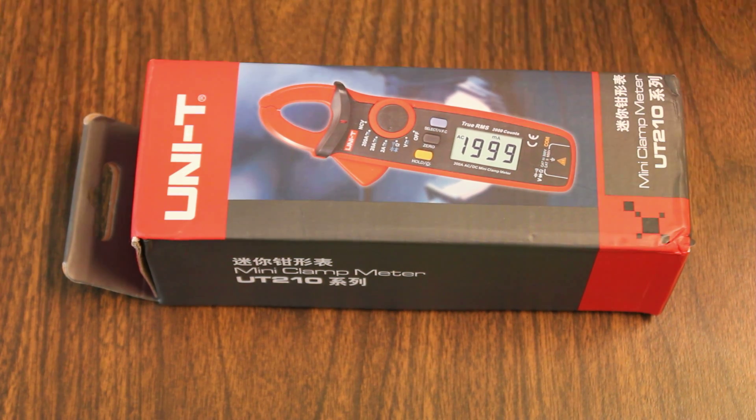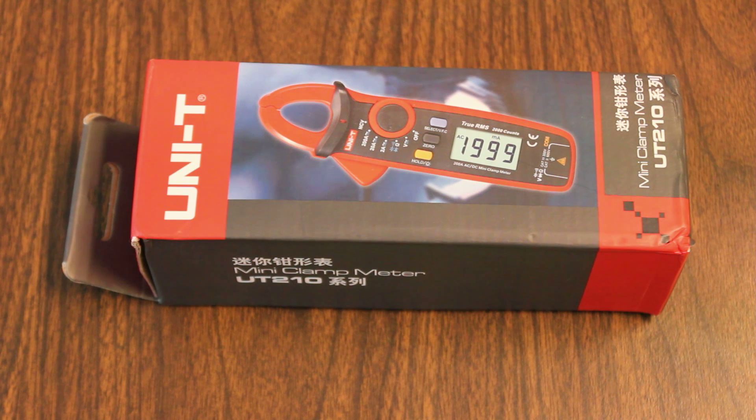So what a clamp meter does is a clamp meter uses non-contact effects. For AC current, it measures the induced magnetic field around the wire, and for DC currents, it uses what's called Hall effect to measure the current without having to place the sensor in line. It just clamps around the wire and measures the current. So it's a very useful tool to have. It makes measuring current very easy.